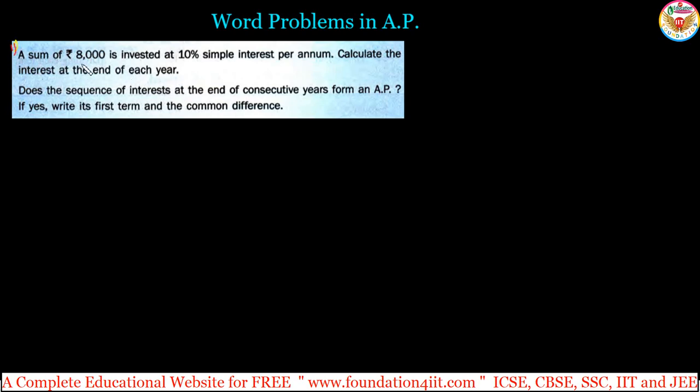A sum of ₹8,000 is invested at 10% simple interest. Calculate the interest at the end of each year. Does the sequence of interests at the end of consecutive years form an AP? If yes, write the first term and common difference.